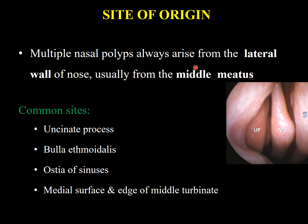Multiple nasal polyps always arise from the lateral wall of the nose, usually from the middle meatus — this area is the osteomeatal complex, as it contains the openings of the maxillary sinus, frontal sinus, and anterior ethmoidal cells. Common sites are the uncinate process, the bulla ethmoidalis, ostia of the sinuses, and the medial surface and edge of the middle turbinate.